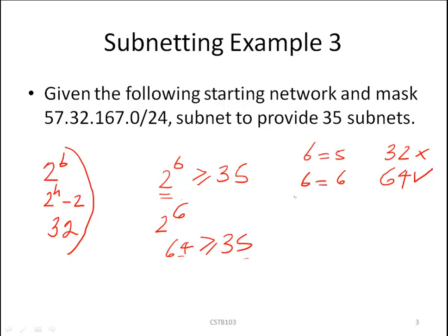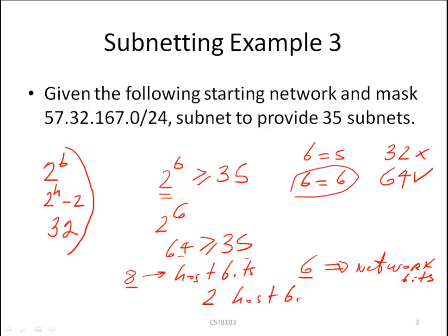Having computed the value of B we can now compute the value of H. Now our original address starts with 8 host bits. We have taken six of those host bits and transformed them into network bits. So 8 minus 6, we are left with 2 host bits. So H equals 2.